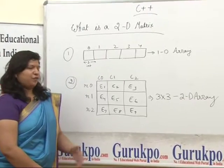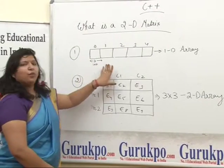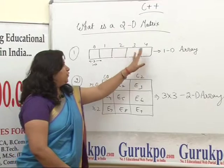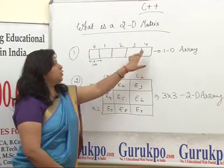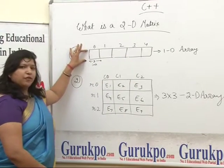What is a 2D array? Before that, let us see what is a 1D array. As you can see, this is a 1D array where we have only one row and five columns, from index 0 to index 4. So we can say there are 5 columns and only 1 row.